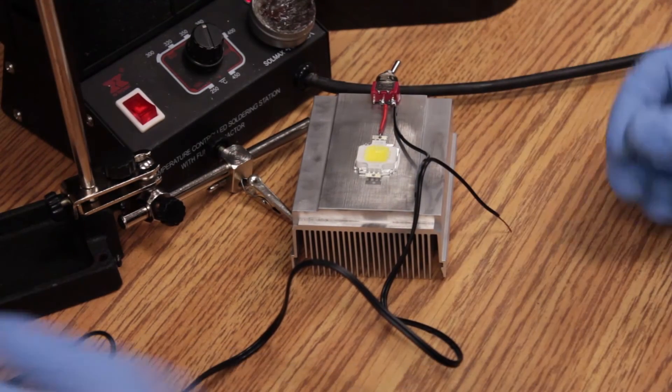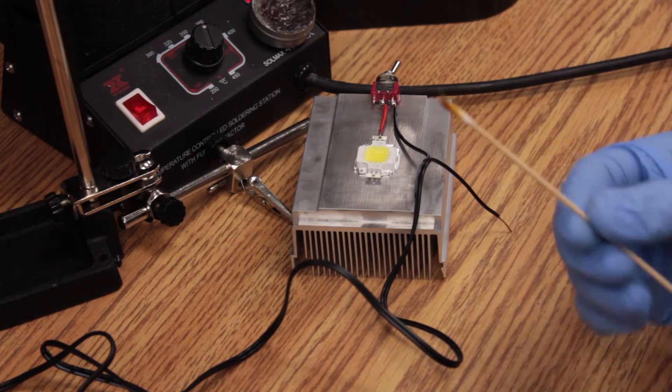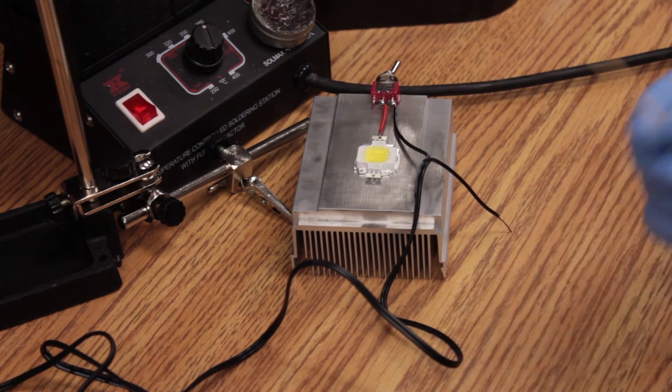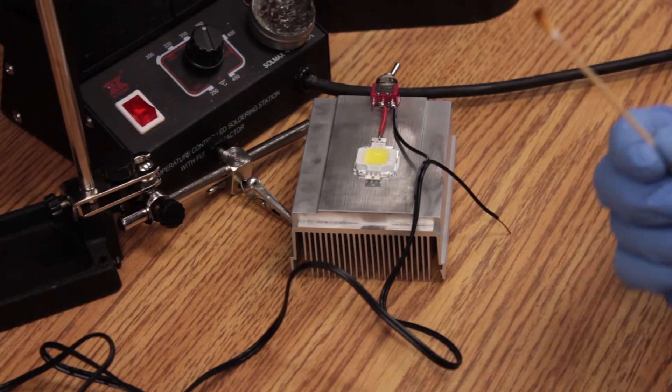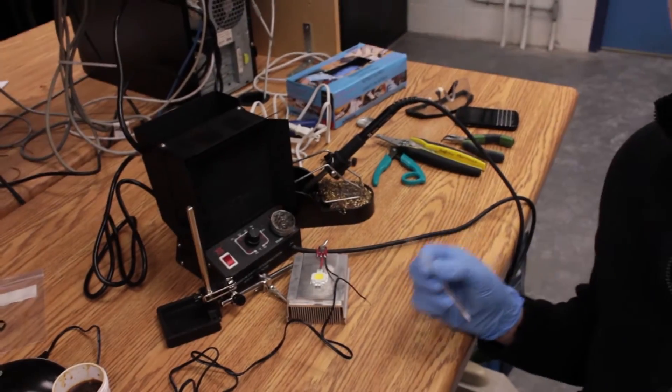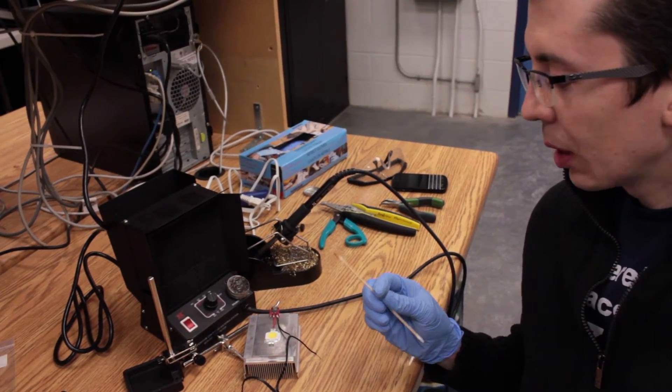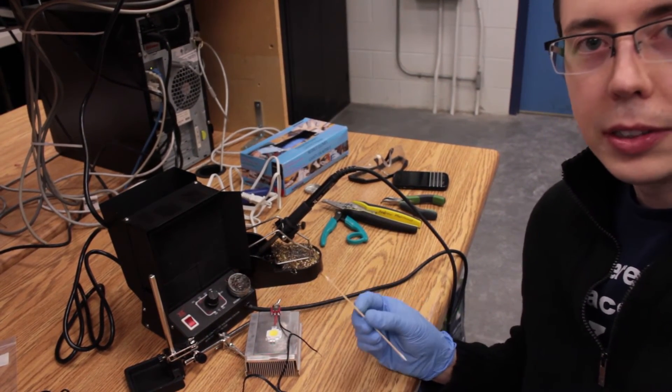Alright, so now we're going to apply some flux paste, which I've been using in my other soldering joints but haven't talked about yet. I love flux paste. First, with flux paste, basically we can make any soldering joint the easiest soldering joint we've ever made.